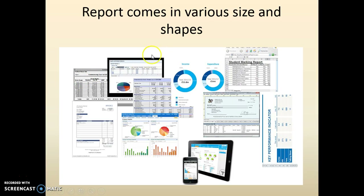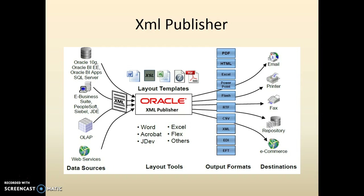Reports come in different shapes and sizes. These days reports can be heat maps, regular tabular formats, checks, or key performance indicators. XML Publisher is a powerful tool that provides all these features — it can extract data from any data source (in our examples, primarily the Oracle database). Once extracted, the data can be formatted using templates and presented in any output form such as PDF, HTML, or Excel, and delivered to the right destination.